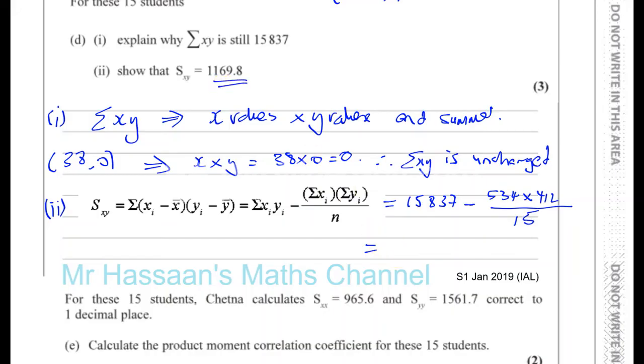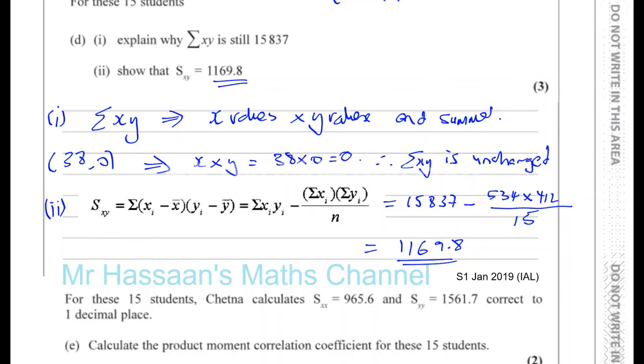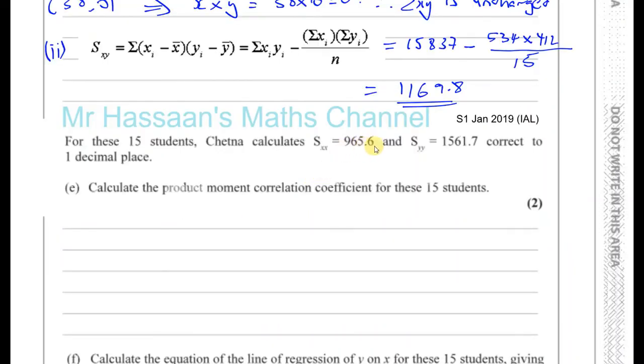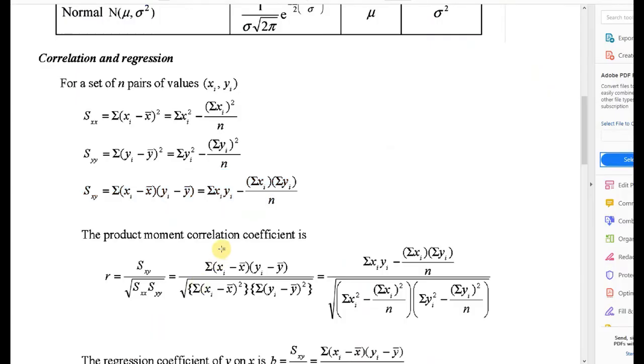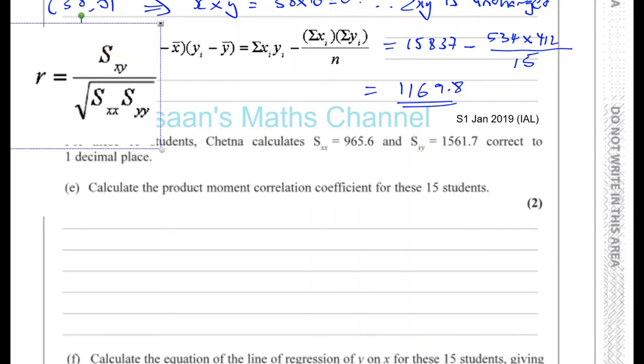Then it says for these 15 students, Chetna calculates that SXX, which is how x varies with itself, is 965.6. And SYY, how y varies with itself, is 1561.7, correct to one decimal place. Calculate the product moment correlation coefficient for these 15 students. Now PMCC is given the symbol R. So we have to use this formula here.